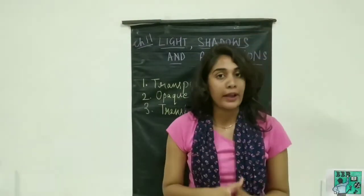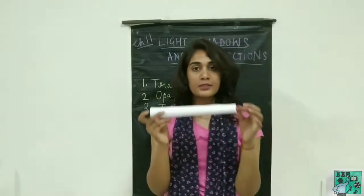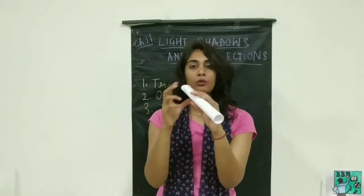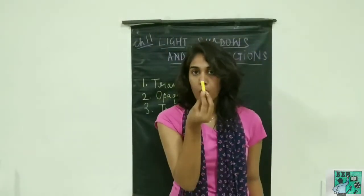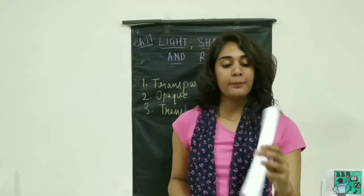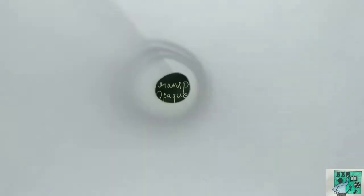We have a next activity that we are going to perform. This is a straight pipe that I simply folded and rolled into paper. And this is a piece of chalk. I have to show you that if I place one end of this pipe on camera and another end, we place this piece of chalk. You can clearly see this piece of chalk through this pipe.